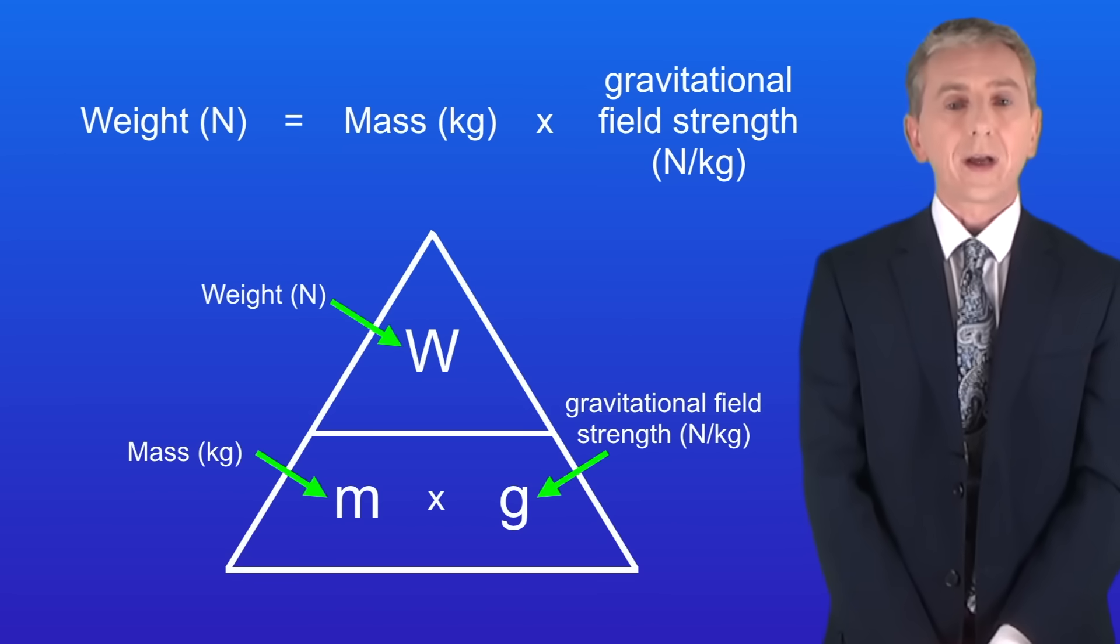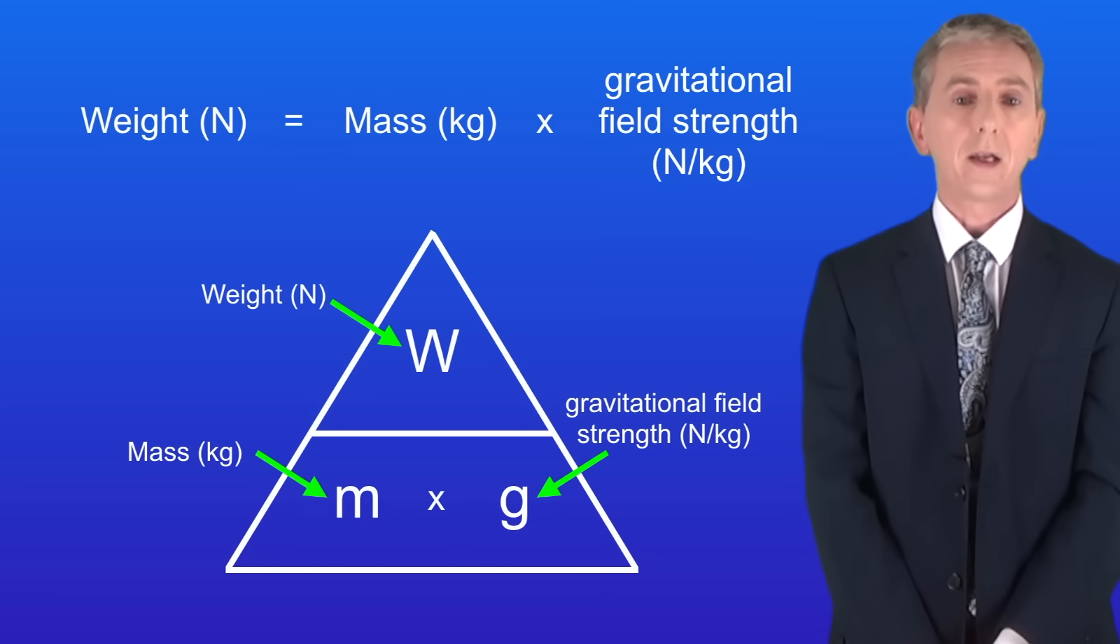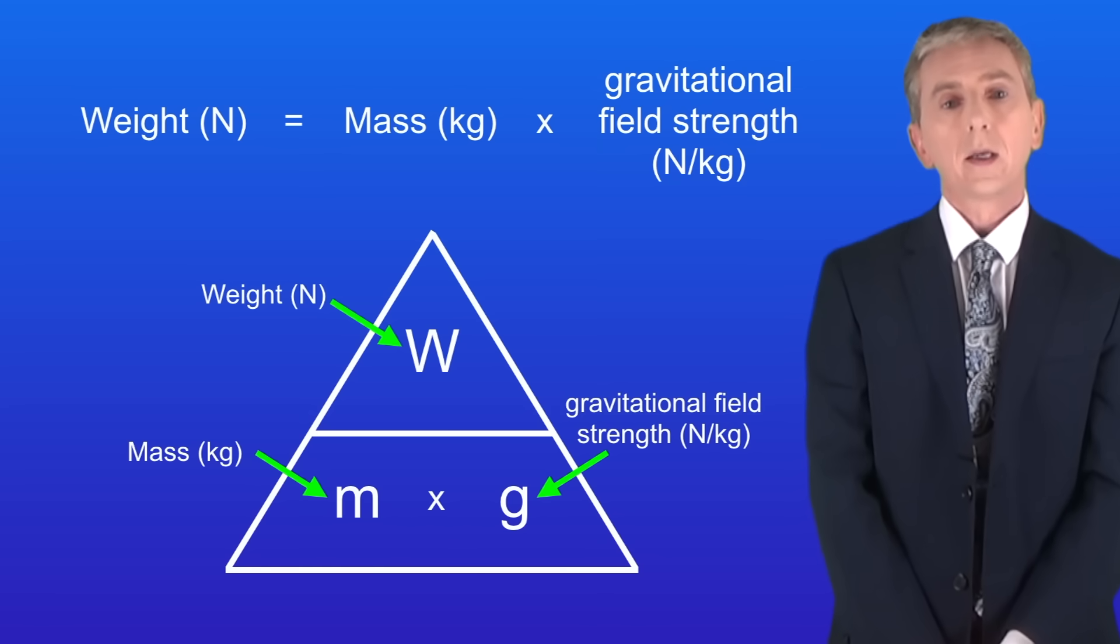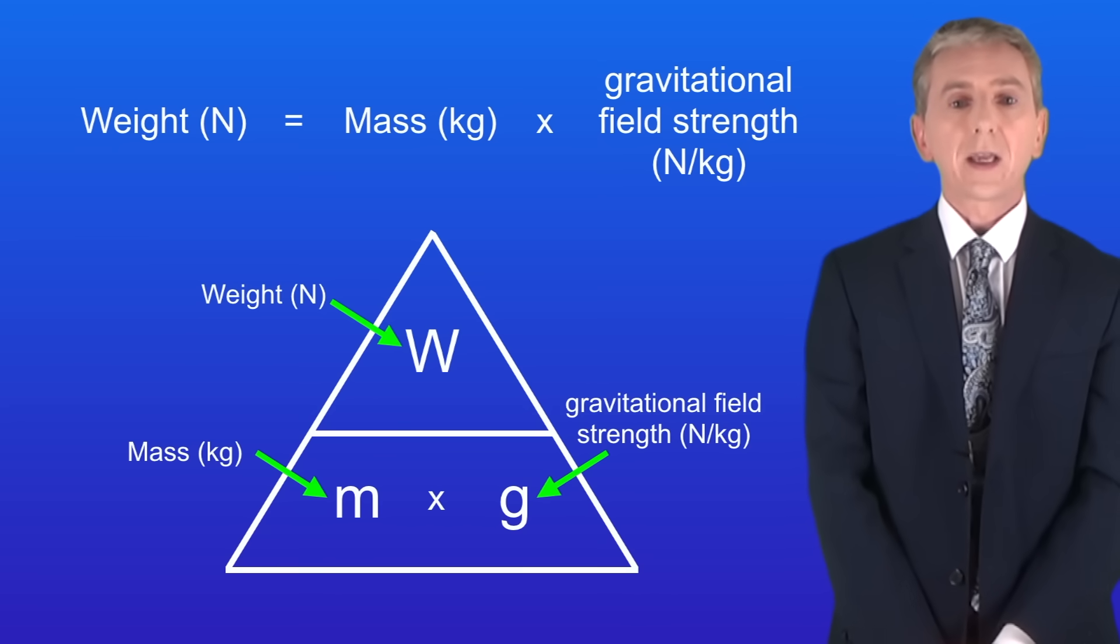Now we can calculate the weight of an object using this equation. The weight in newtons equals the mass in kilograms multiplied by the gravitational field strength in newtons per kilogram. Now you're not given this equation in the exam so you need to learn it. However you will be given any necessary value for the gravitational field strength.